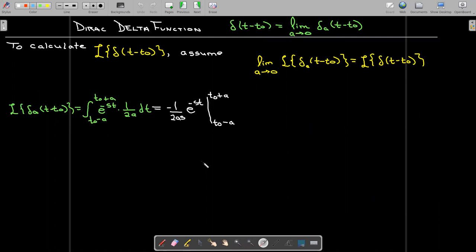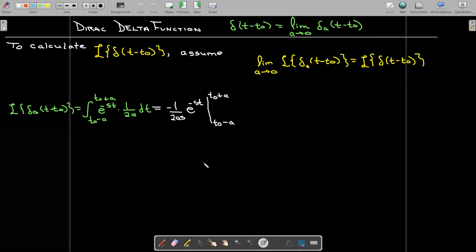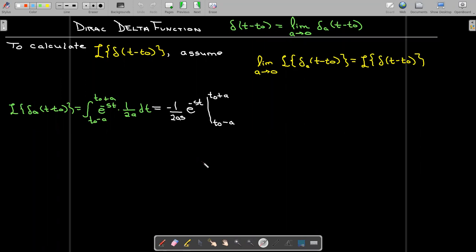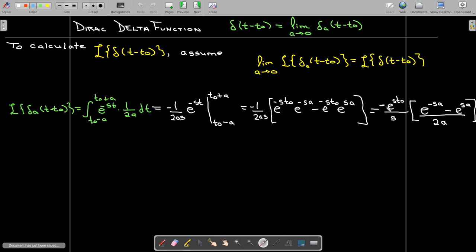The antiderivative is quite simple. So we just have the 1 over 2a multiplied by negative 1 over s. And now we have to do quite a bit of evaluation and algebra. And then we'll have to take the limit as a goes to zero. So let's go ahead and do that evaluation.